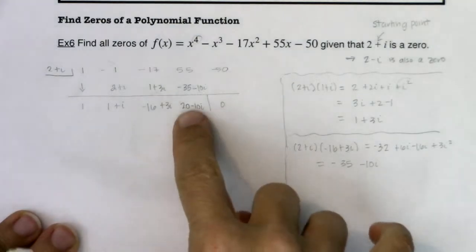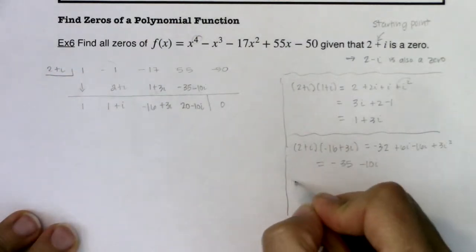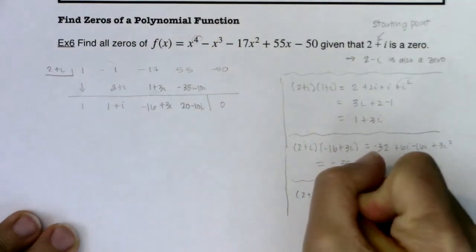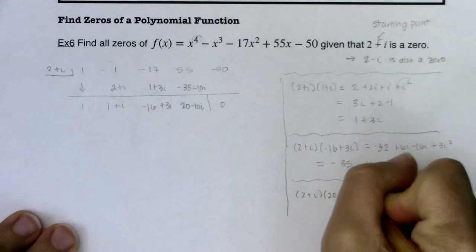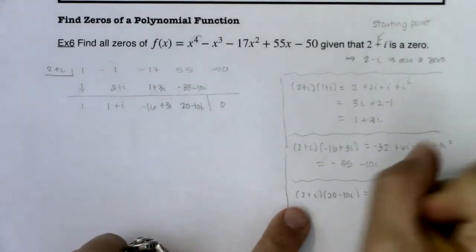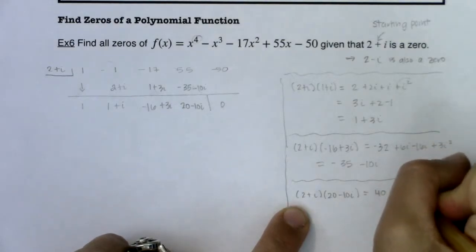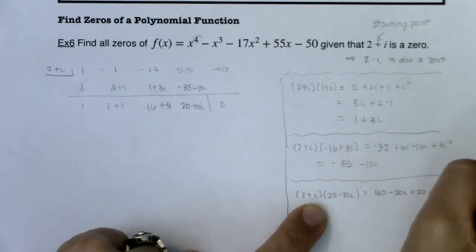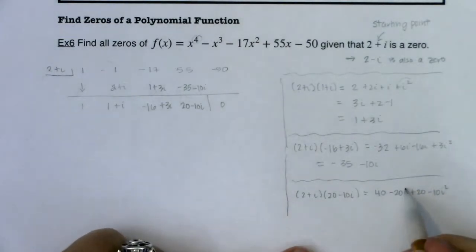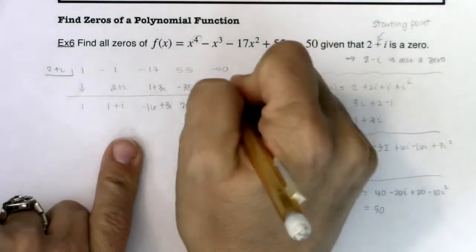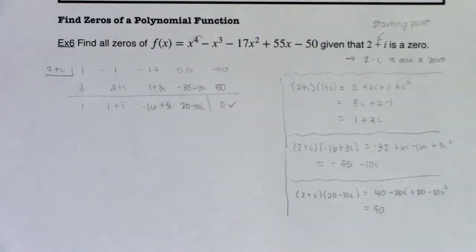Then I need to multiply 2 plus i times 20 minus 10i. FOILing: first is 40, outer is minus 20i, inner is plus 20i, last is minus 10i squared — the i terms cancel, and negative 10i squared is plus 10. So this becomes 50. I put 50 here, and sure enough I get zero back out. And I should have — that's great.